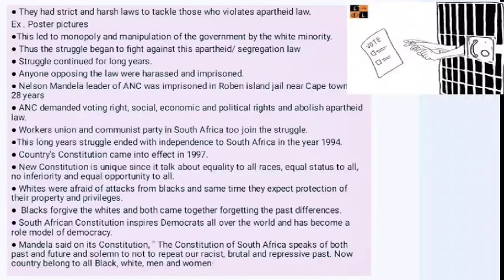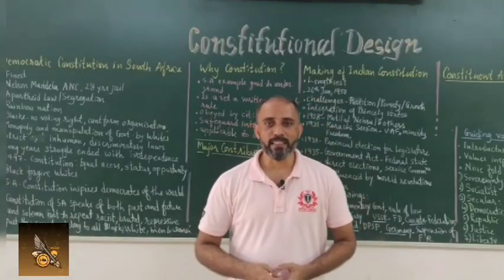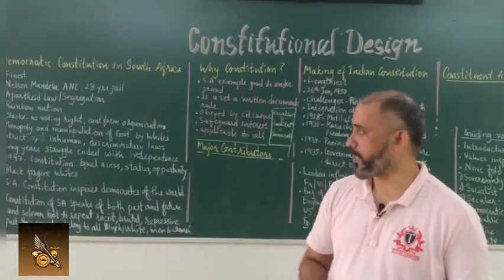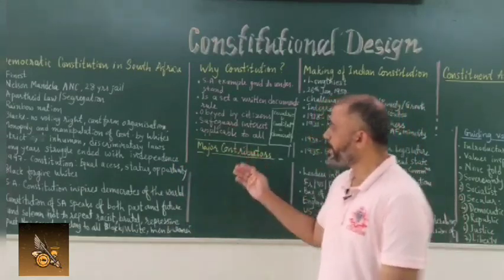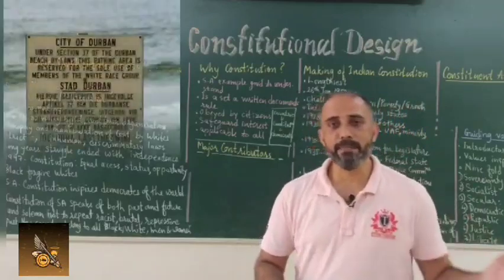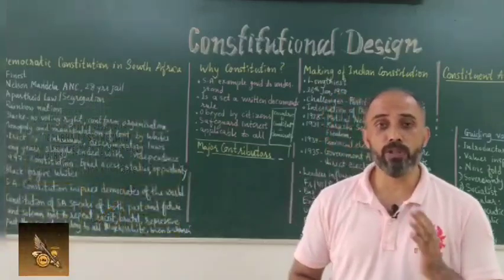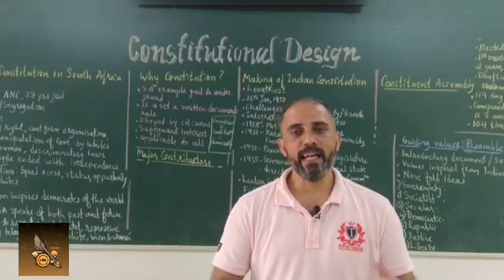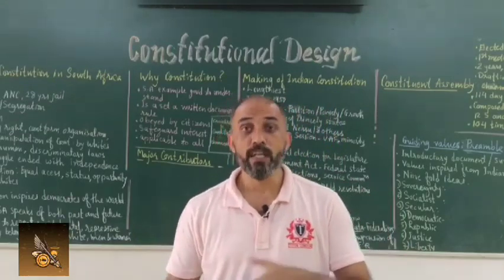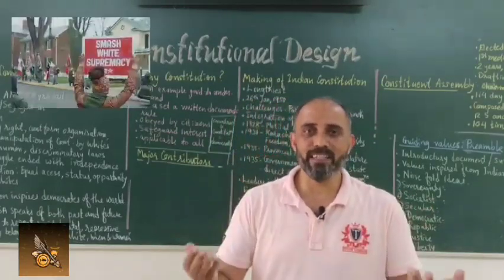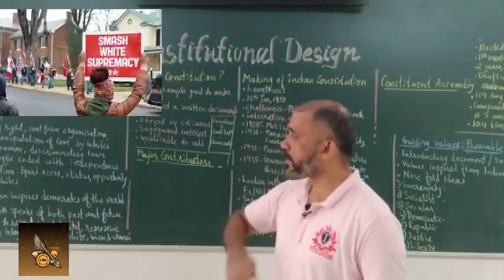Blacks had no right to vote, and they could not form any organization unless it was declared a legal organization. Because of all these factors, whites had full monopoly and manipulated the governing system in South Africa. They had strict, inhuman, and discriminatory laws. For example, whites had separate bathing areas - the seashores were restricted only for whites. Blacks and whites had separate bus stands, hospitals, schools, and residential areas.